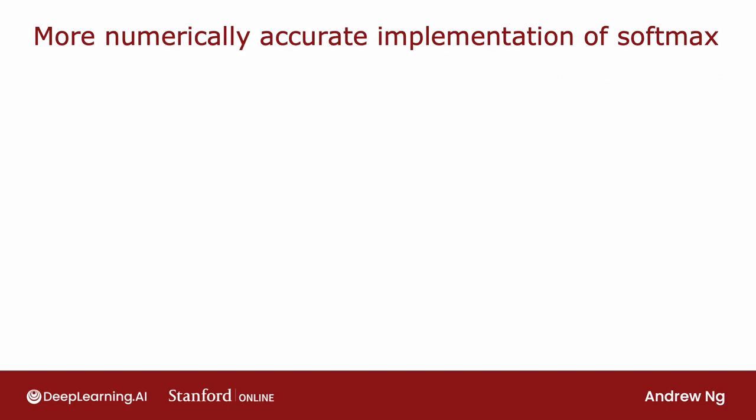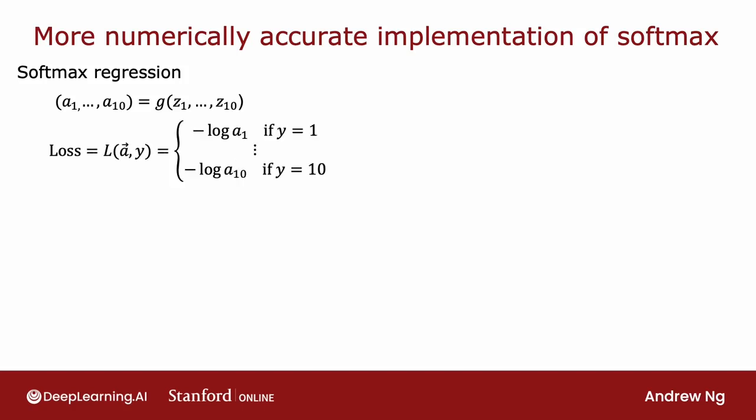Now, let's take this idea and apply it to softmax regression. Recall what you saw in the last video was you compute the activations as follows. The activations is g of z1 through z10, where a1, for example, is e to the z1 divided by the sum of the e to the zj. And then the loss was this. Depending on what is the actual value of y, it's negative log of aj for one of the ajs.